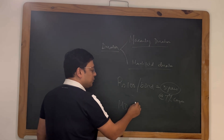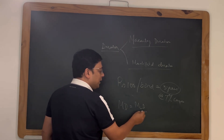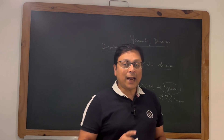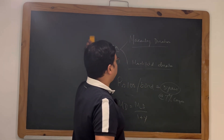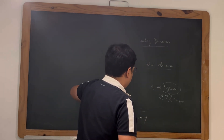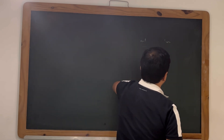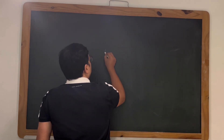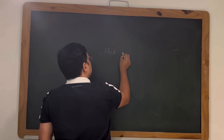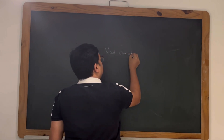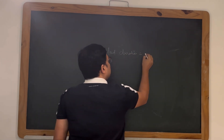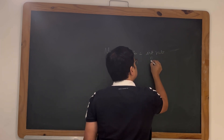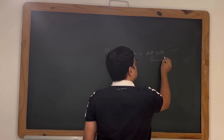Modified duration is your Macaulay duration divided by (1 + YTM). That gives you the actual interest rate sensitivity. In simple terms, modified duration tells you how sensitive the bond's price is to changes in interest rates.